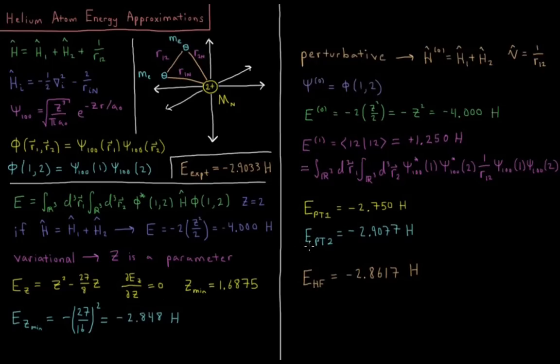What about second order perturbation theory? Well second order perturbation theory gets much, much closer. It gets negative 2.9077 Hartrees. And if you go to very high order perturbation theories, you know, 10th, 11th, 12th order, you get a number which gets very, very close to this experimental energy.